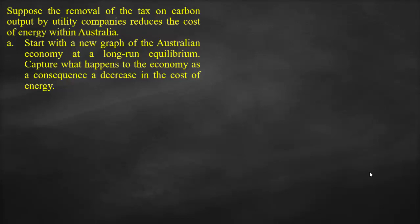Suppose the removal of the tax on carbon output by utility companies reduces the cost of energy within Australia. Start with a new graph of the Australian economy at a long-run equilibrium, and capture what happens to the economy as a consequence of a decrease in the cost of energy.